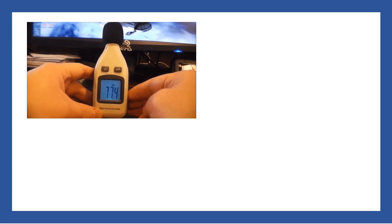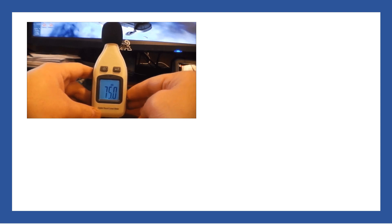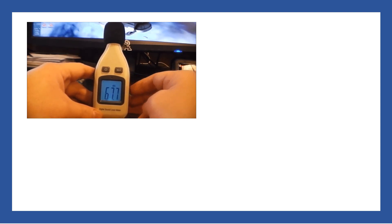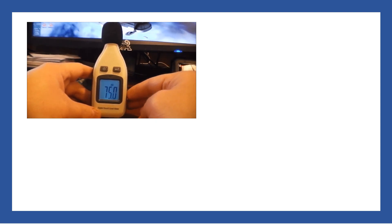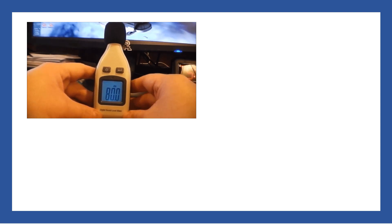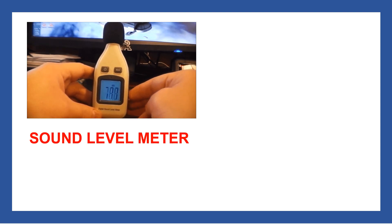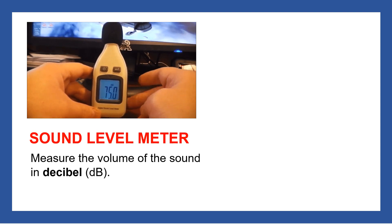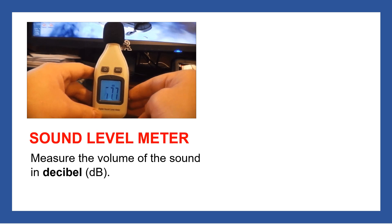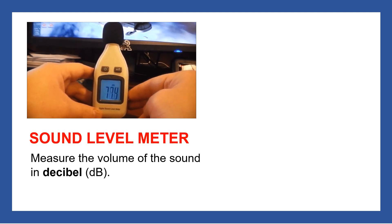I have here another instrument. As you can see on the screen, there is a number being shown, and at the top of the instrument is a microphone where it will receive the sound. This instrument is known as the sound level meter, or sound meter. The sound meter is used to measure the volume of the sound in decibels — the short form is dB — so decibel is the unit for sound.